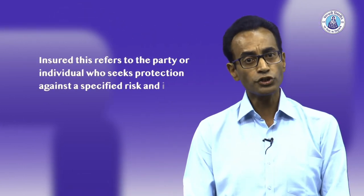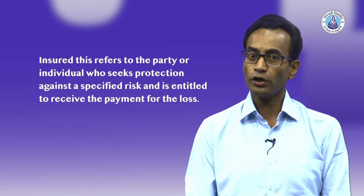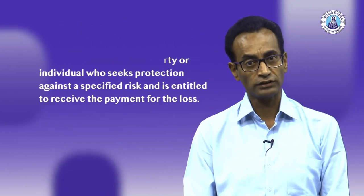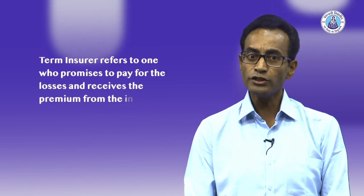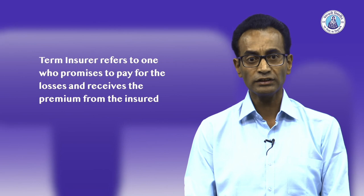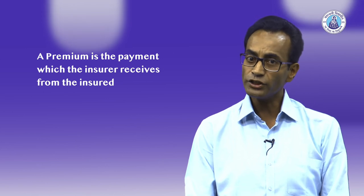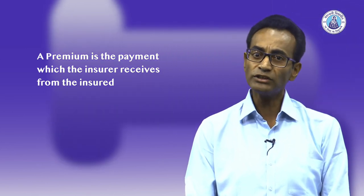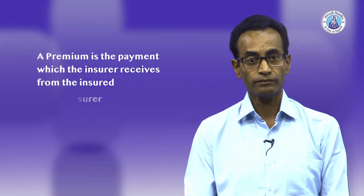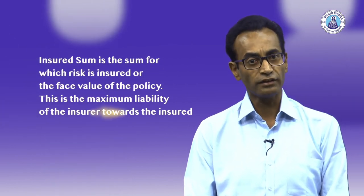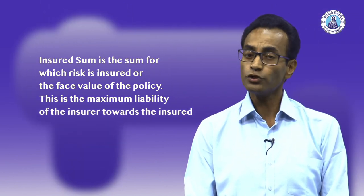Now let us understand some basic insurance terminology. The term 'insured' refers to the party or individual who seeks protection against a specified risk and is entitled to receive payment for the losses. The term 'insurer' refers to one who promises to pay for the losses and receives the premium from the insured. A 'premium' is a payment which the insurer receives from the insured. A 'policy document' is a document that contains the terms and conditions of the contract and is issued by the insurer. 'Insured sum' is the sum for which risk is insured, or the face value of the policy, and is the maximum liability of the insurer towards the insured.